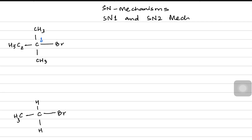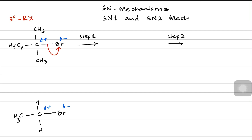We know the carbon-halogen bond is polar in both scenarios because bromine is a highly electronegative atom. If you start with a tertiary halogenoalkane you follow the SN1 mechanism. There are two steps — step one and step two. In the first step the carbon-halogen bond breaks in a heterolytic manner and you get a carbocation with the three methyl groups in the same position, but this time the carbon has a full positive charge, not just a partial plus.